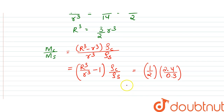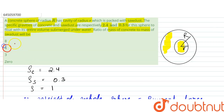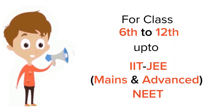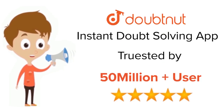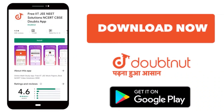So the ratio turns out to be 8/2 = 4. The ratio of mass of concrete to mass of sawdust is 4, so option B is the answer. Thank you. For class 6 to 12, IIT JEE and NEET level, trusted by more than 5 crore students — download DoubtNet today.